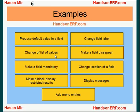You can make different values appear in that list, or you can produce a restricted list of values. You can make a field disappear from the screen, or make certain fields mandatory if they come as optional. You can also change the location of a field, make a block display restricted results as opposed to displaying everything, and make certain messages appear on the screen. You can also add menu entries.